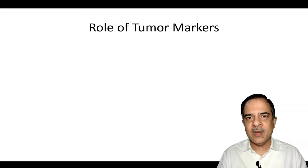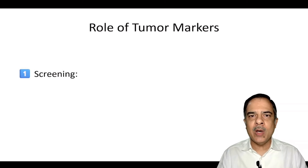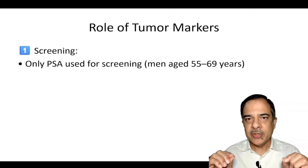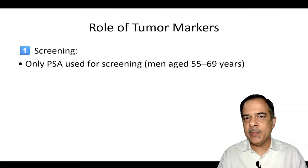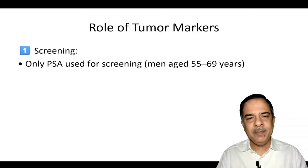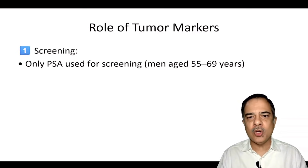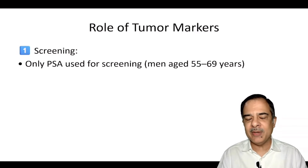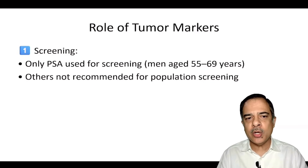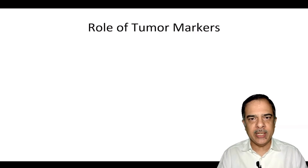So what is the role of these tumour markers? Regarding screening, they should not be used for screening in a general population. Only PSA is recommended for screening, and that too in men between the age of 55 to 69 years. Others are not recommended for population screening.